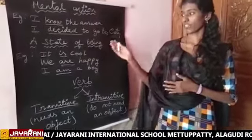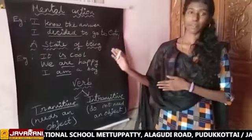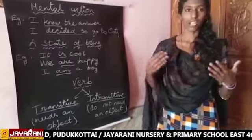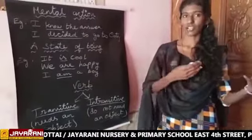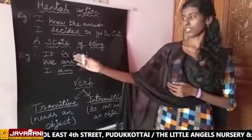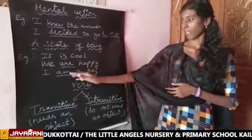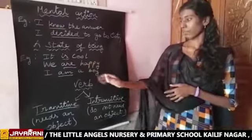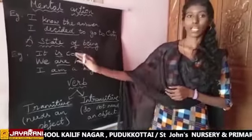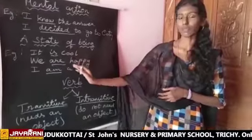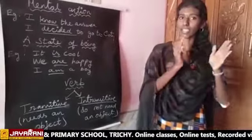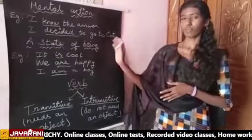The state of being represents auxiliary verbs and helping verbs like 'is,' 'are,' 'was,' and 'have.' Look at the examples: 'It is cool,' 'We are happy,' 'I am,' and 'have bought.' In these sentences there is no main verb — all these verbs are helping verbs, that is, auxiliary verbs. A sentence built with the help of auxiliary verbs is said to be a state of being.